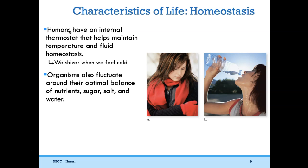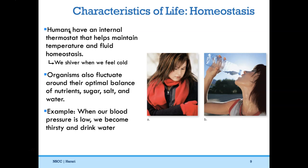We're always fluctuating around the optimal balance of nutrients, sugar, salt, and water. Our body needs to be balanced, and if there's an imbalance, our body makes us fix that with homeostasis. For example, our blood pressure fluctuates throughout the day. When it's too low, our body tells us that we're thirsty, so we drink water, increasing fluid in our body and boosting blood pressure back to normal. A lot of these things happen unbeknownst to us, because our body is always making sure we're in this biological balance.